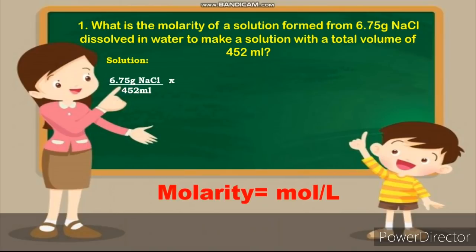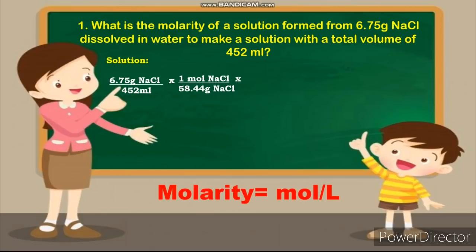In this given example, we have neither moles nor milliliters directly. The amount of solute is given in grams on top, and the volume of solution is given in milliliters on the bottom. We will use dimensional analysis to convert grams to moles and milliliters to liters to arrive at our final answer in molarity. We can use a periodic table to find that the molar mass of NaCl is 58.44 g.